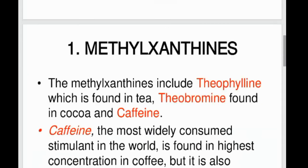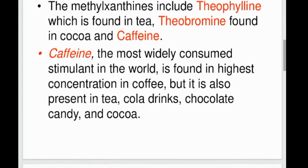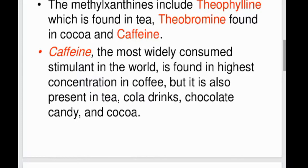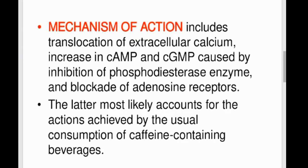Psychostimulants have predominant cortical action. Methylxanthines include theophylline found in tea, theobromine found in cocoa, and caffeine, which is the most consumed stimulant in the world, found in highest concentration in coffee. Their mechanism includes translocation of extracellular calcium, increases in cAMP and cGMP caused by inhibition of phosphodiesterase enzymes, and blockage of adenosine receptors.